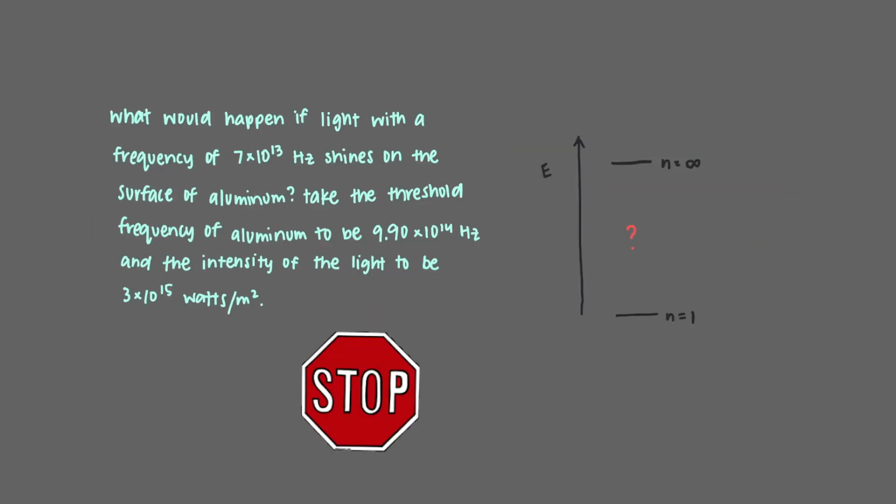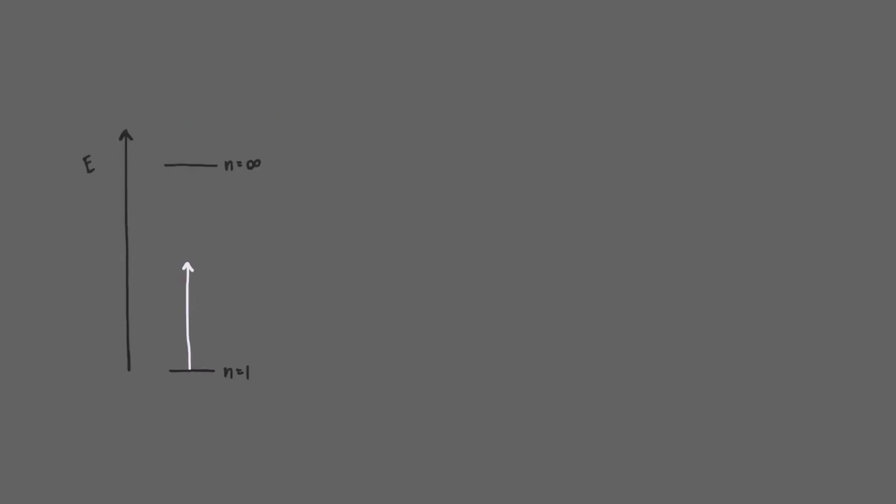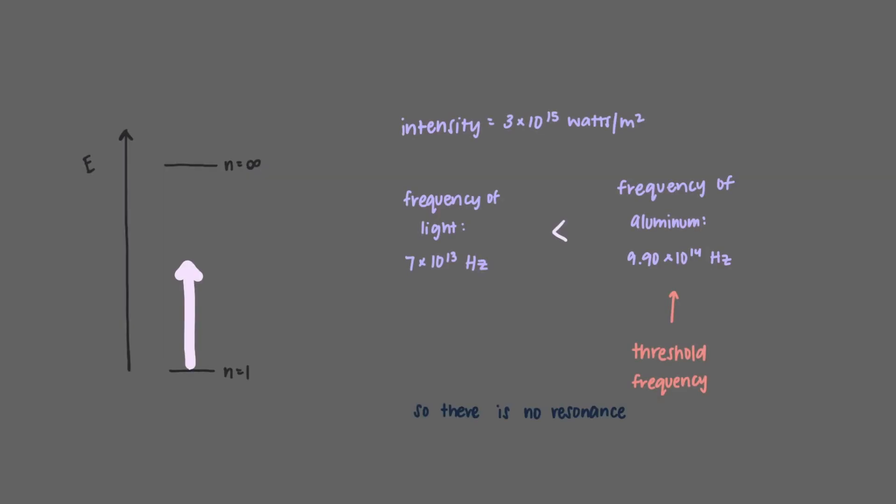What would happen if light with this frequency shines on the surface of aluminum? Take the threshold frequency of aluminum to be this, and the intensity of the light to be 3×10^15 watts per square meter. Even though the intensity of the light is relatively high, the frequency of the light does not reach the minimum threshold frequency. That means that this light is not in resonance with the change in the electron, and so the light is not absorbed and the electron is not removed from the metal.